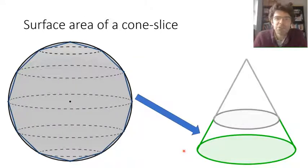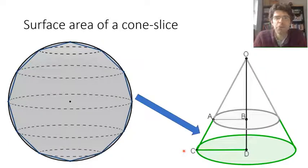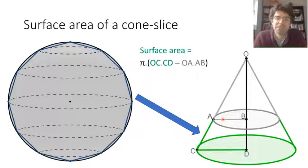So suppose we've got a cone with the apex O, cut by planes where the circular sections have radii AB and CD. We saw in the previous video that the surface area of the cone down to C is proportional to OC times CD, whereas the surface area of the cone just down to A is proportional to OA times AB. So how can we get a handle on the value of OC times CD minus OA times AB?